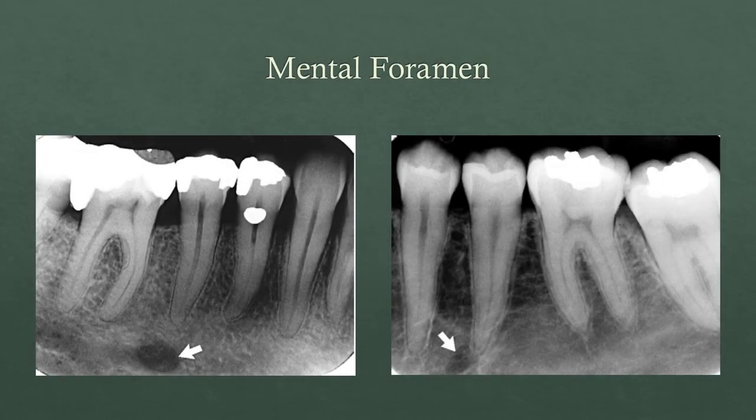The mental foramen is another important structure. The key issue is that if it happens to line up right at the apex of a tooth, it can look like a periapical rarefaction or radiolucency and be confused with a sign that the tooth is necrotic. But it's actually a foramen of the canal as it exits buccally, around the level of the second mandibular premolar.